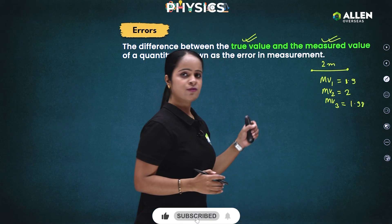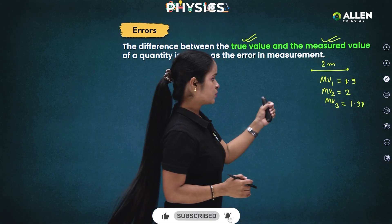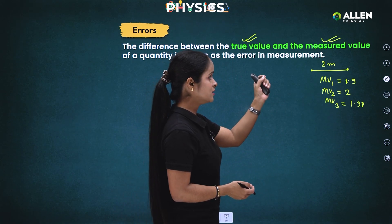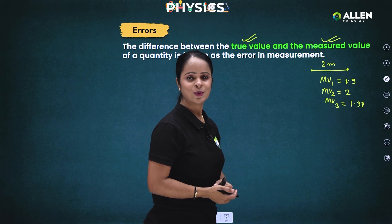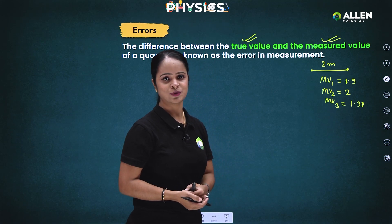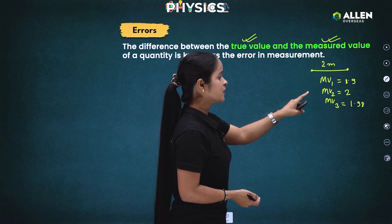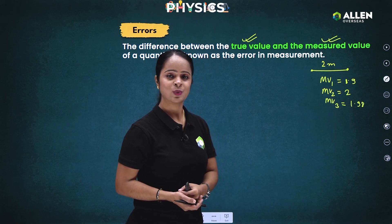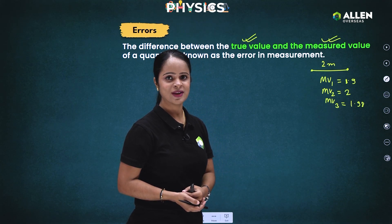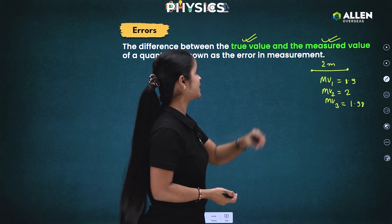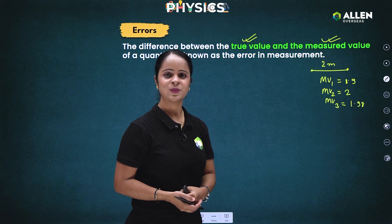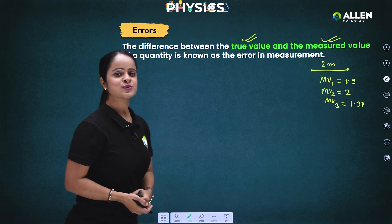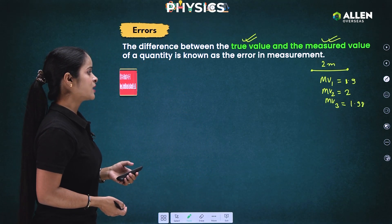So MV1, MV2, and MV3 are nothing but measured values. Now when you take the mean of these measured values, you are going to find the true value. So let's move ahead to the next point.